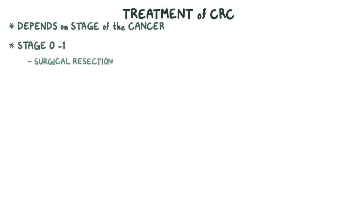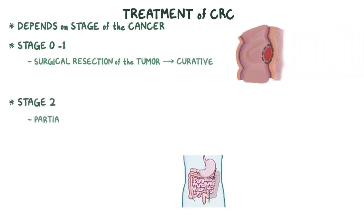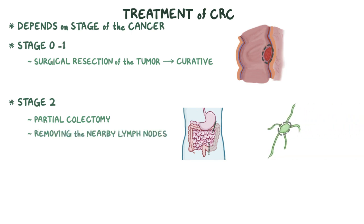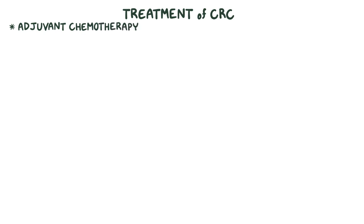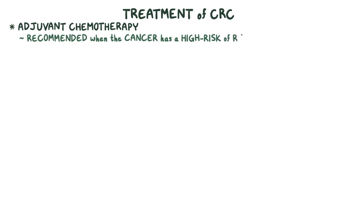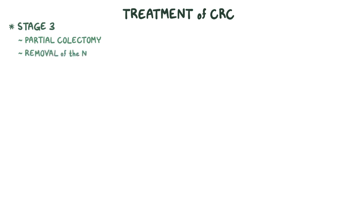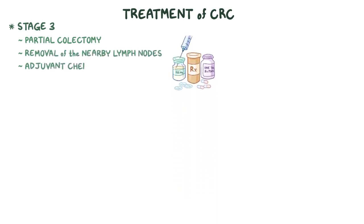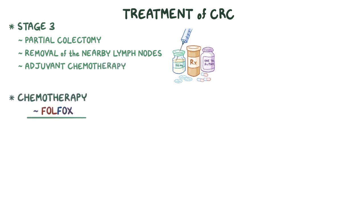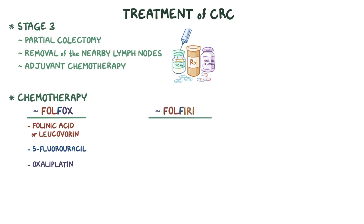Treatment for colorectal carcinoma depends on the stage. For stage 0 and 1, surgical resection of the tumor is usually curative. For stage 2, a partial colectomy may be needed along with removing the nearby lymph nodes. Adjuvant chemotherapy is recommended when the cancer has a high risk of recurrence, such as when the CRC obstructs or causes a perforation in the colon, or develops near large blood vessels. For CRC stage 3, a partial colectomy and surgical removal of the nearby lymph nodes is recommended, along with adjuvant chemotherapy. Chemotherapy typically includes the Folfox regimen — folinic acid or leucovorin, 5-fluorouracil, and oxaliplatin — or the Folfiri regimen of folinic acid or leucovorin, 5-fluorouracil, and irinotecan.